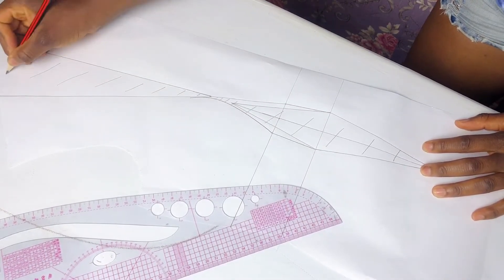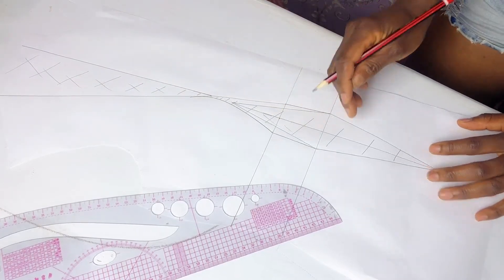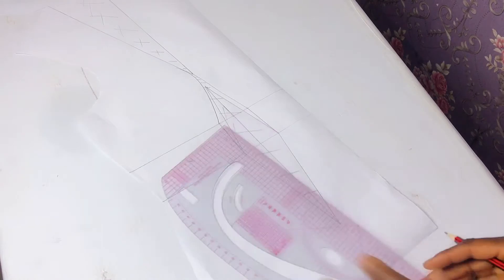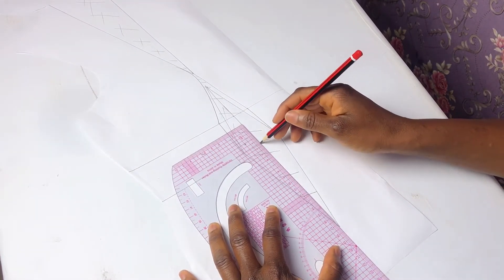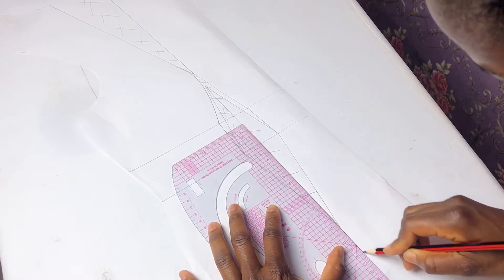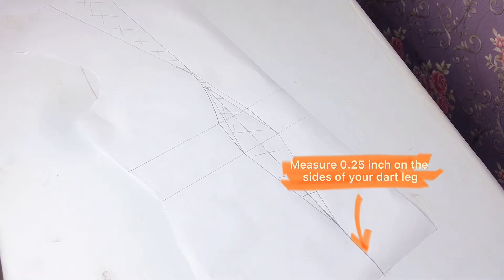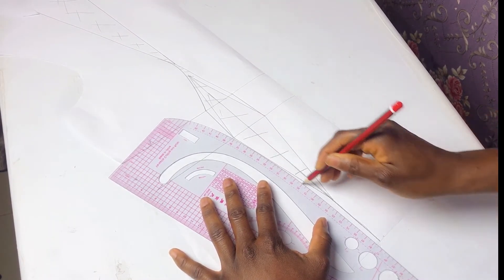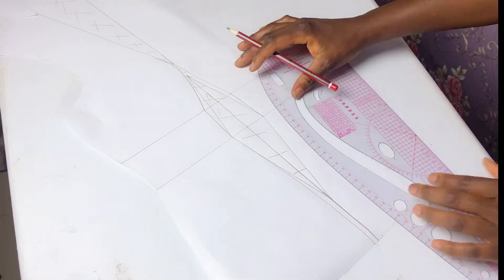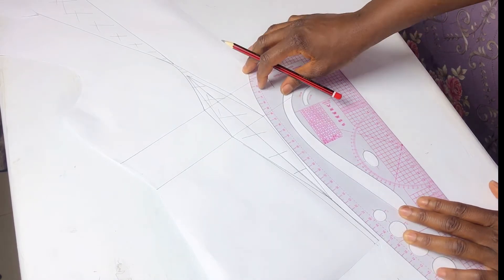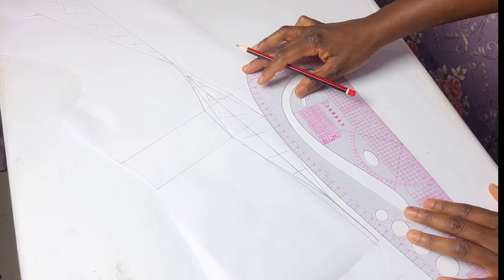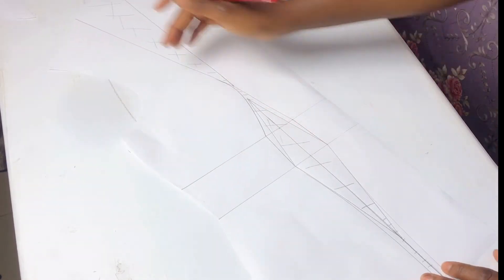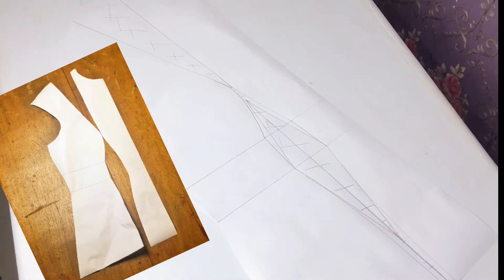Now if you are working on a blouse or a top that extends beyond your waist and you want a princess seam line all the way down, what you're going to do is extend the middle waist dart leg down to the hem you're working with and then measure 0.25 on the sides, on both sides of that line. And you connect back to your waist dart, just blend it back with a slight curve. You can also add fullness like add a godet between the seam lines or extend out however you want.